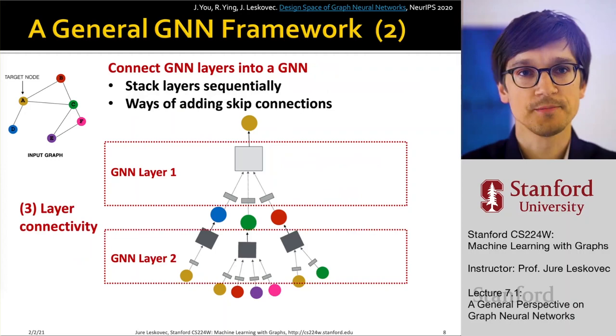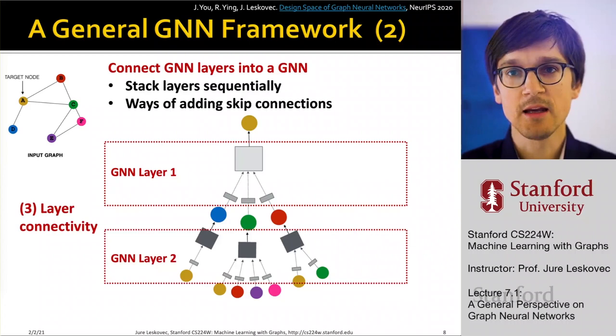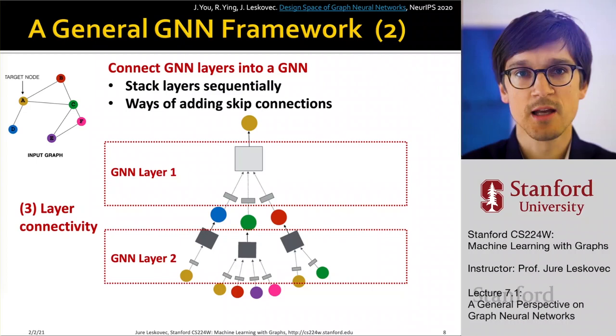The second set of operations is about how are we stacking together multiple layers in a graph neural network. So do we stack these layers sequentially? Do we add skip connections and so on? So that's the second part of the equation is how do we add this layer connectivity when I combine layer 1 with layer 2.